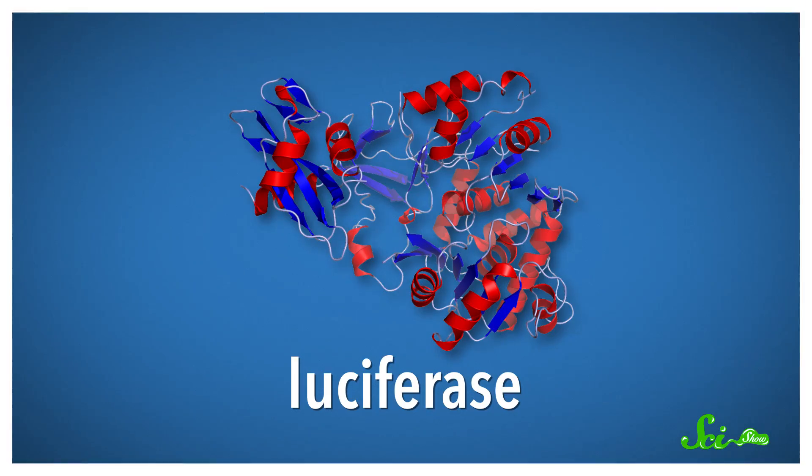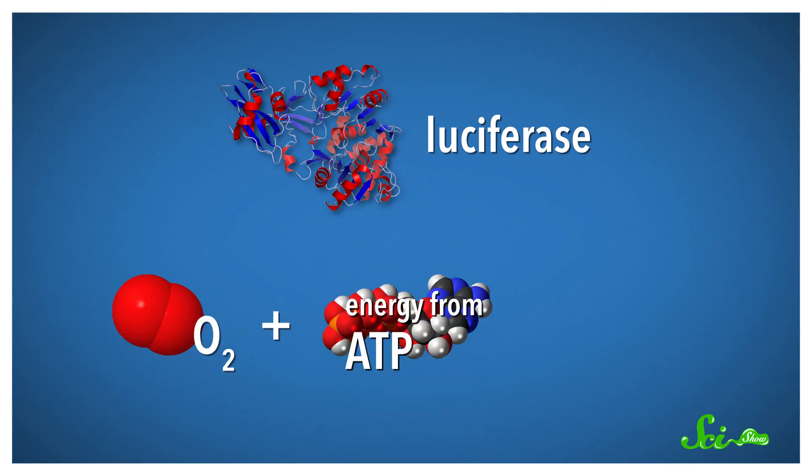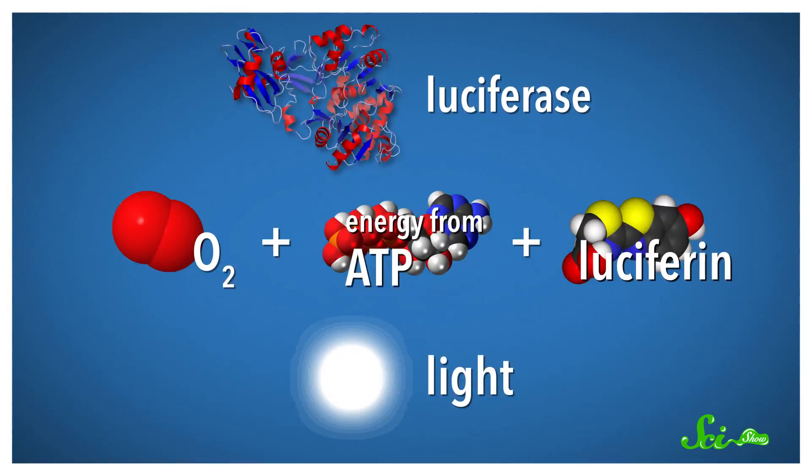They glow using a protein called luciferase, which transforms oxygen, energy from the cell's energy storage molecule ATP, and a special starting chemical called luciferin into light. Super small changes to the firefly luciferase protein can shift the color of light it makes, and fireflies glow from yellow-green to orange and red.